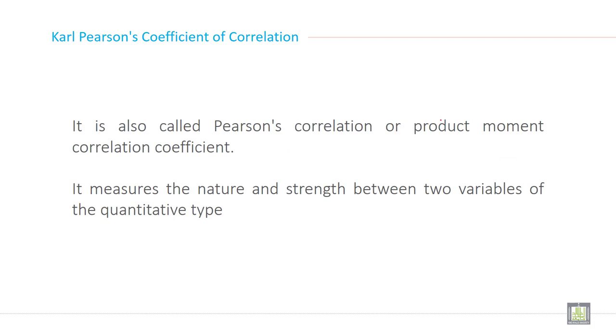It is also called Pearson's correlation or product moment correlation. Pearson correlation or product moment correlation, PMC in short. It measures the nature and strength between two variables of the quantitative types.